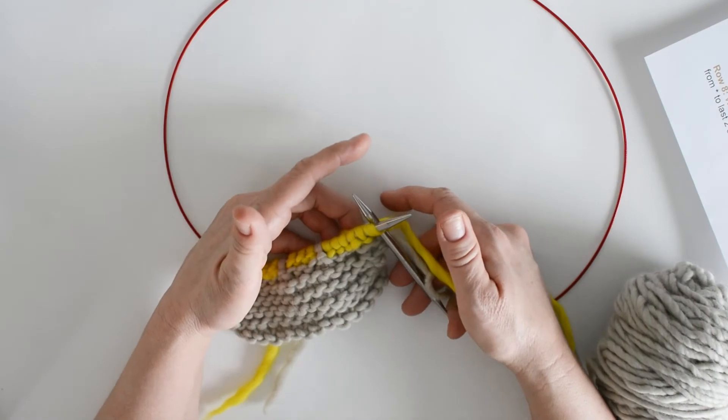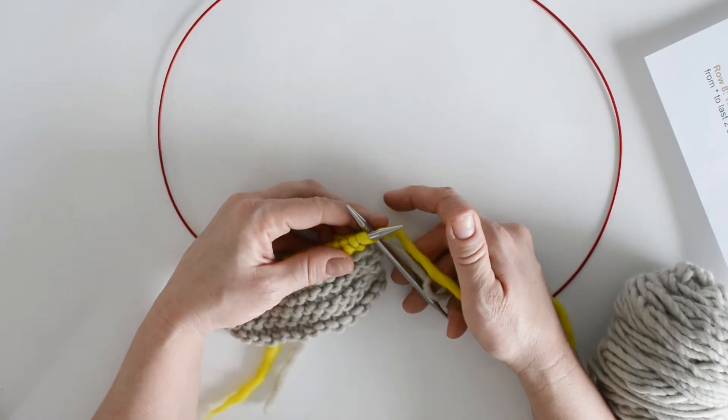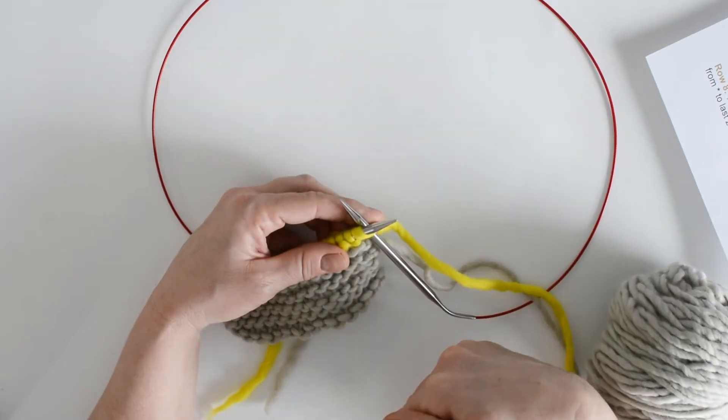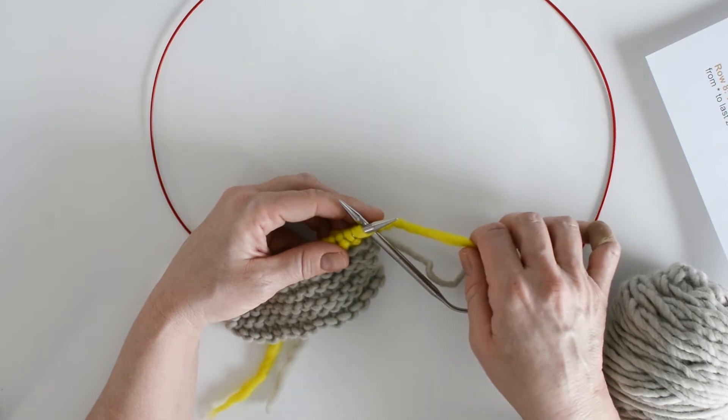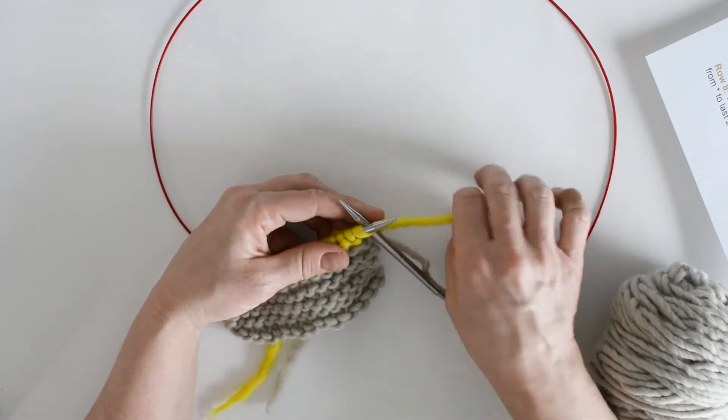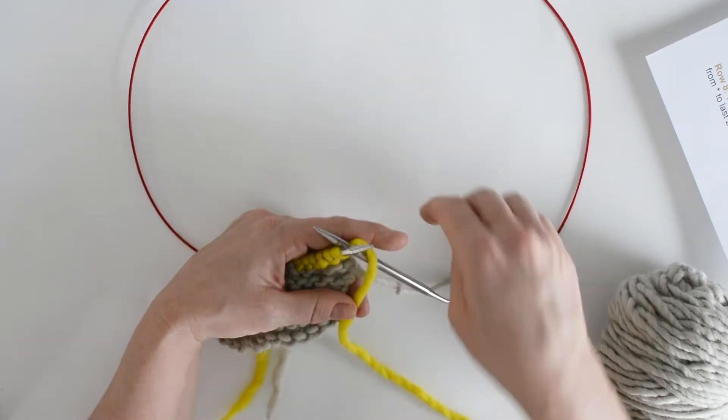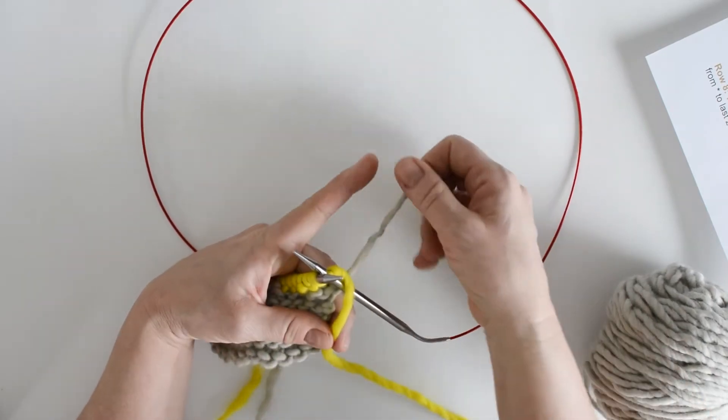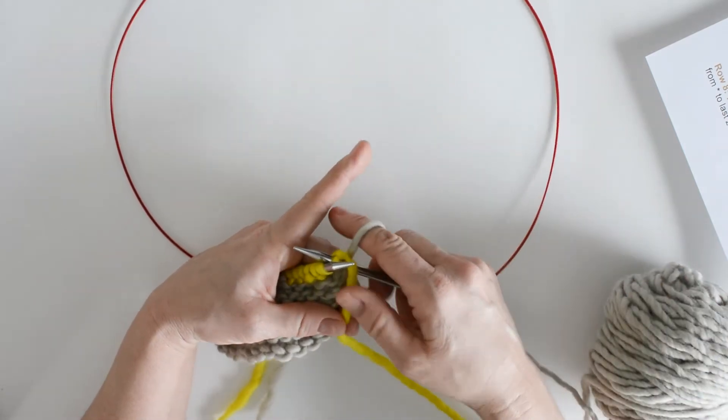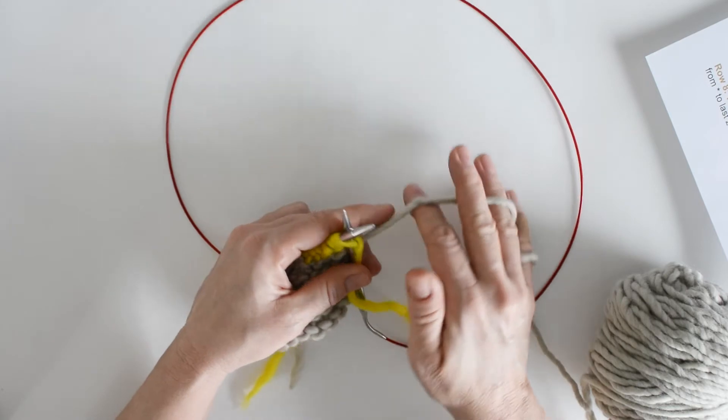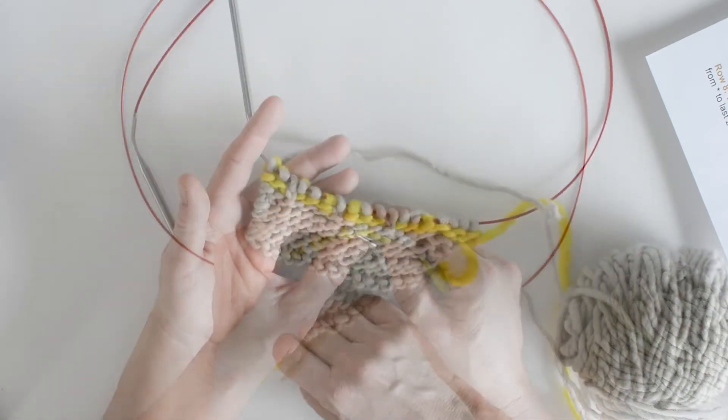One more thing before I begin row 3. If you haven't watched the stripes video, I just want to make sure you know how to carry your yarns up the sides. We do not mean to cut the yarns between rows here. We carry them up the sides. I have just finished working with the yellow yarn. I want to keep that in the front, and I want to bring this grey yarn up from the back, from behind, and begin knitting. And that will give you a nice clean edge.